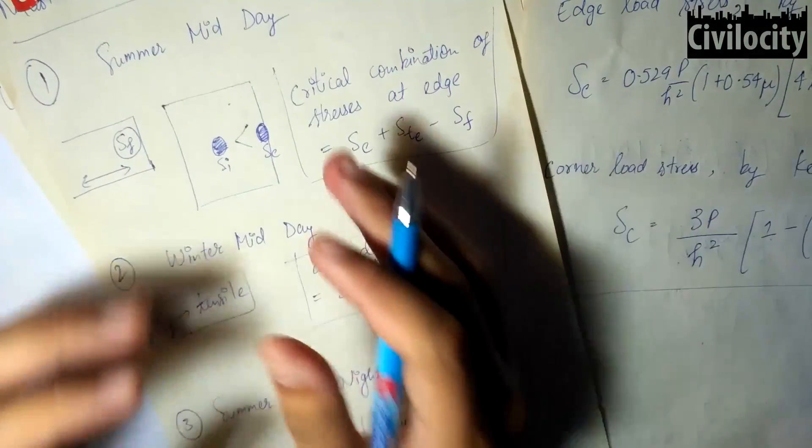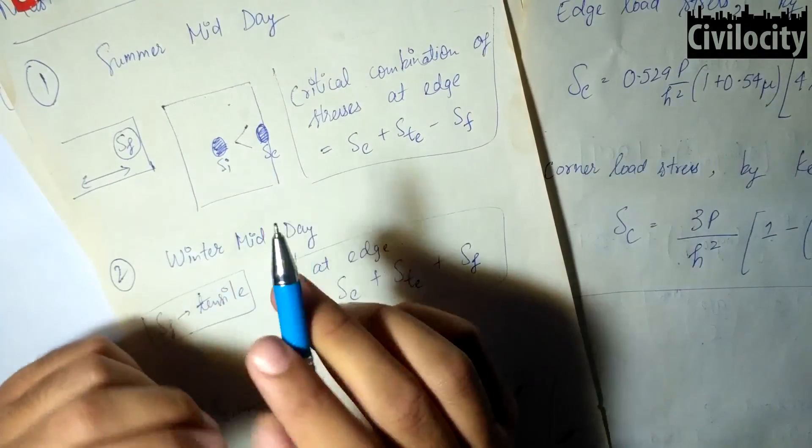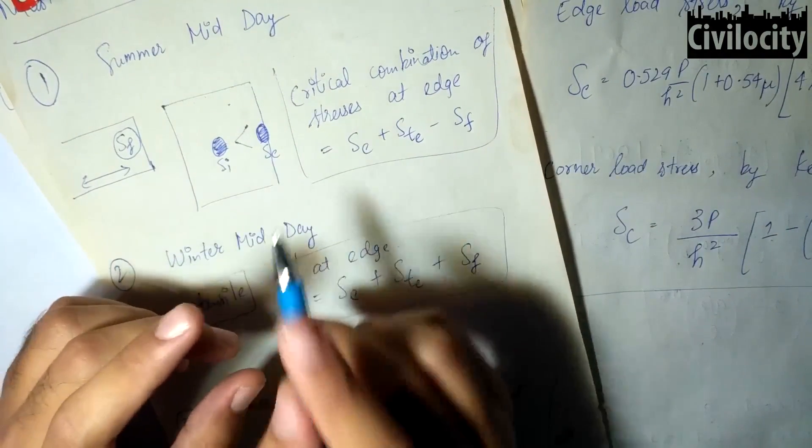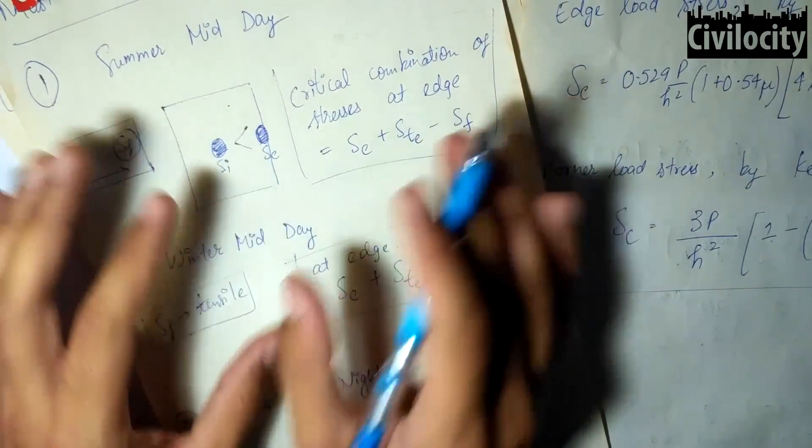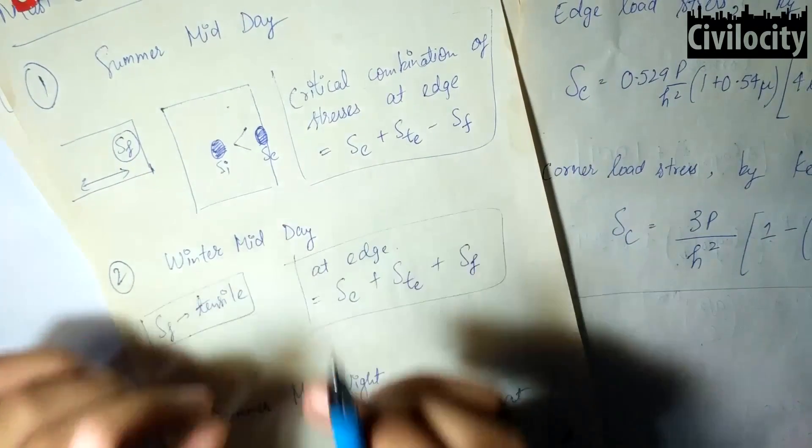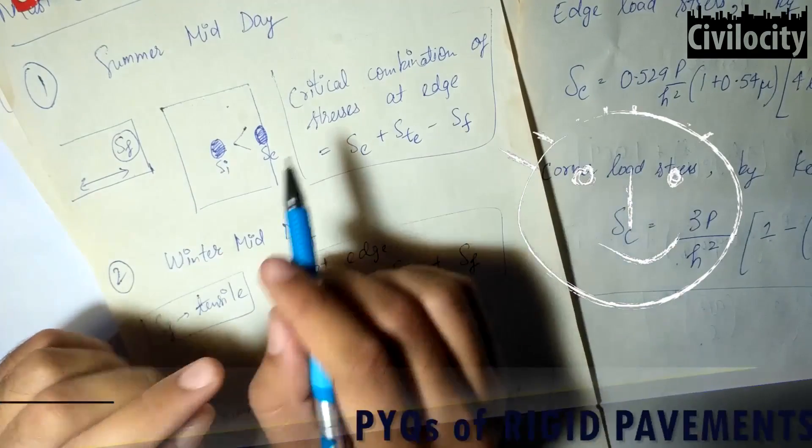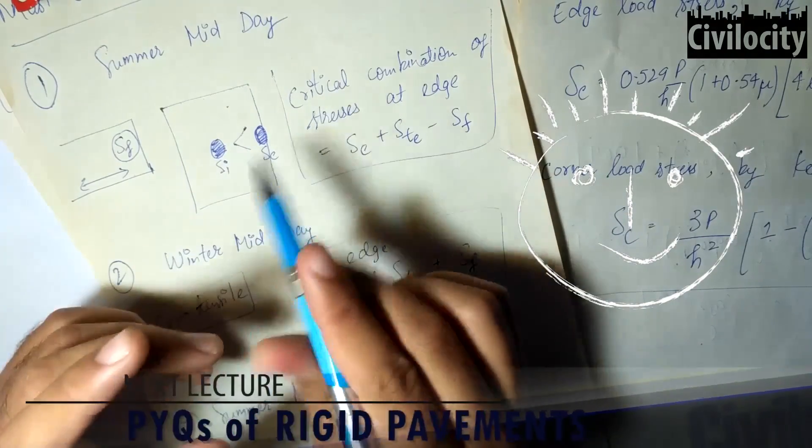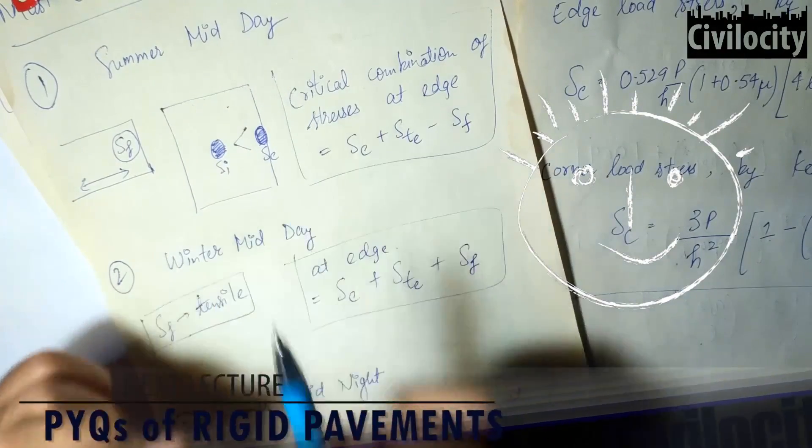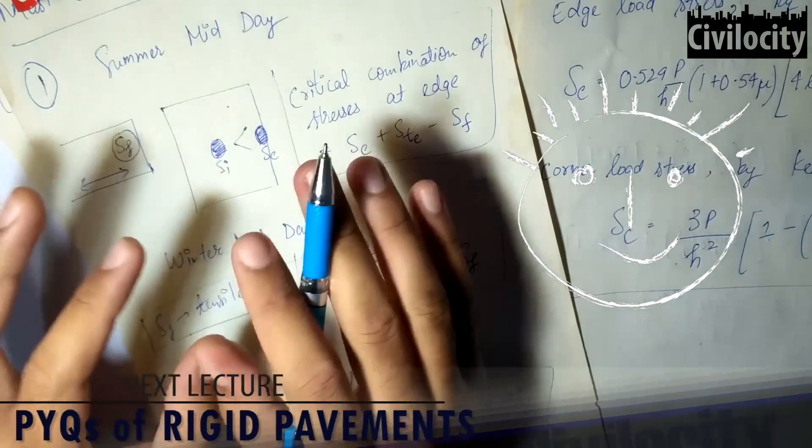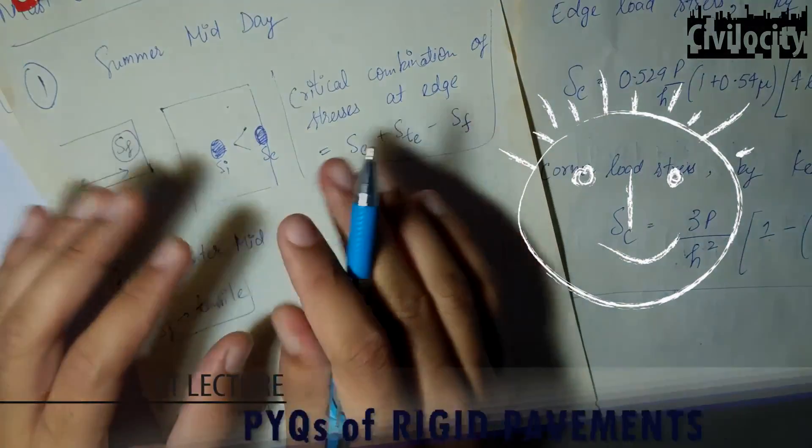So this was all about rigid pavements. In the next lecture, we will solve some questions that have been asked in GATE. We will talk about these topics in depth again when we discuss the syllabus of engineering services examination. Lastly, I would like to thank all of you for being a part of Civilocity and appreciating it so much. You guys are great. Thank you so much for appreciating my work.